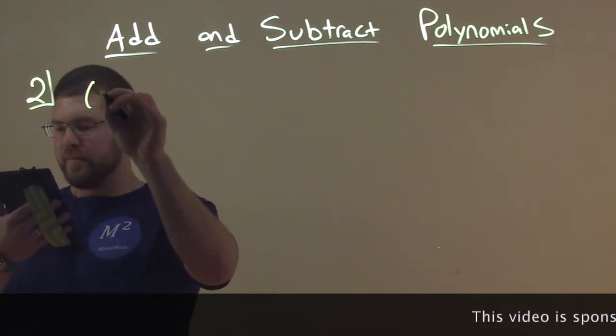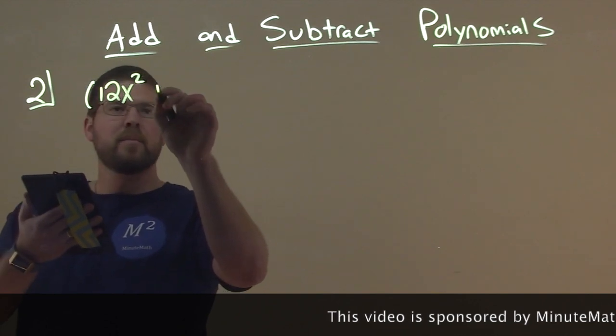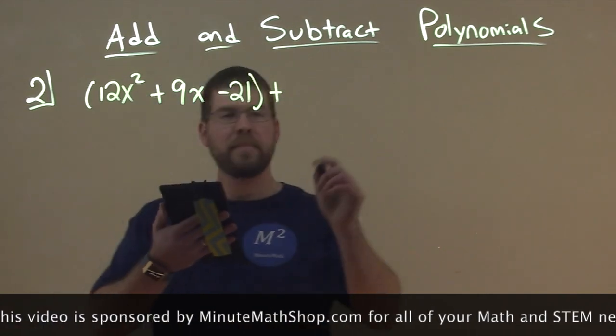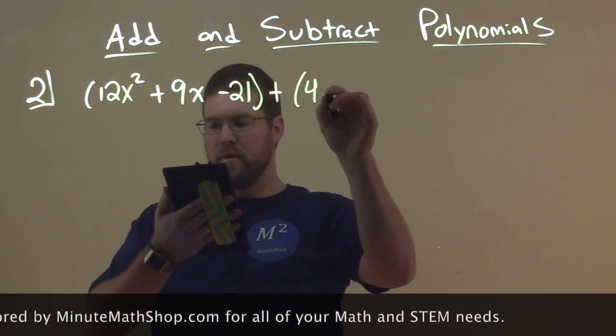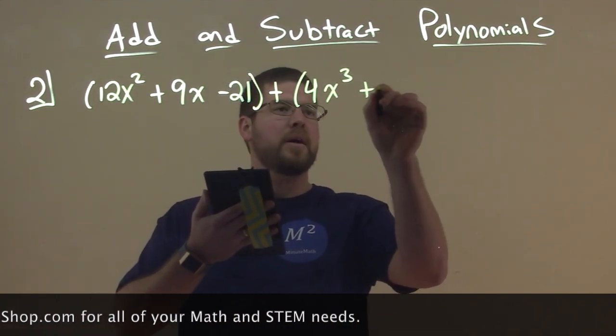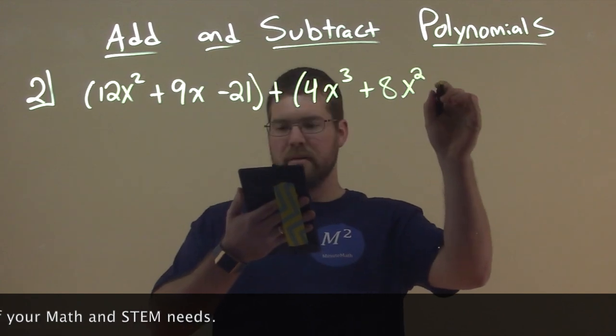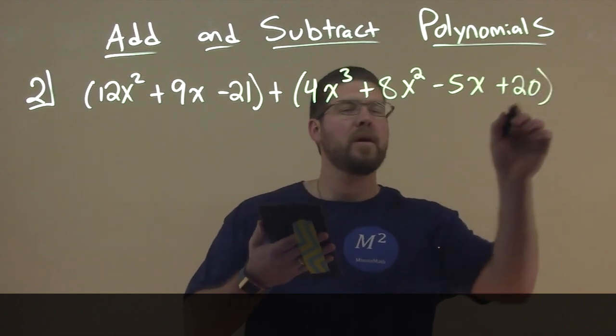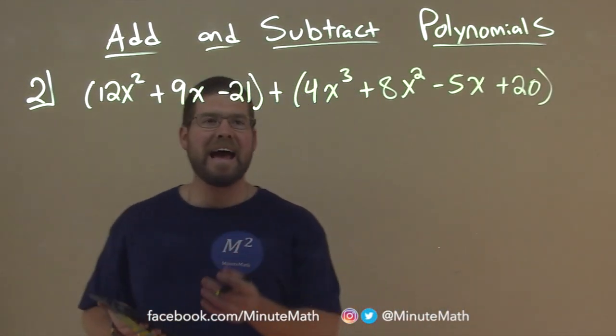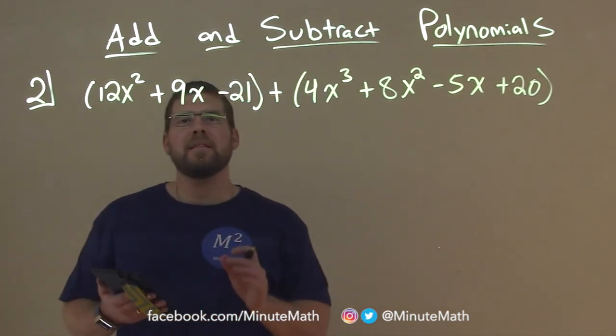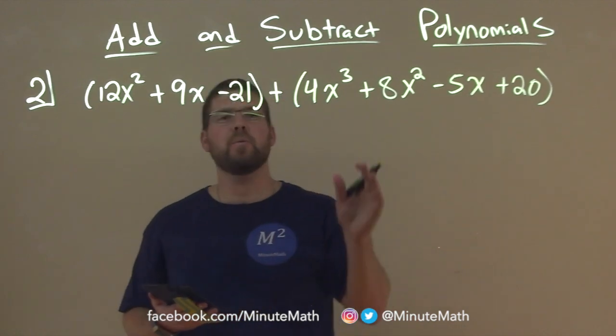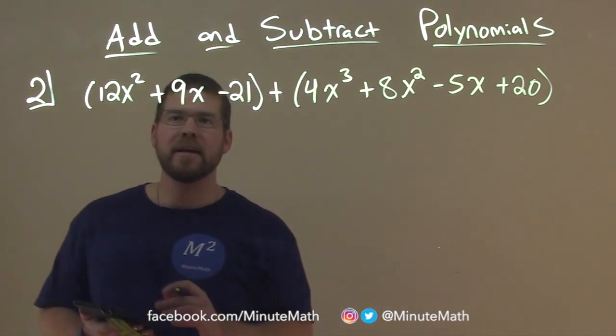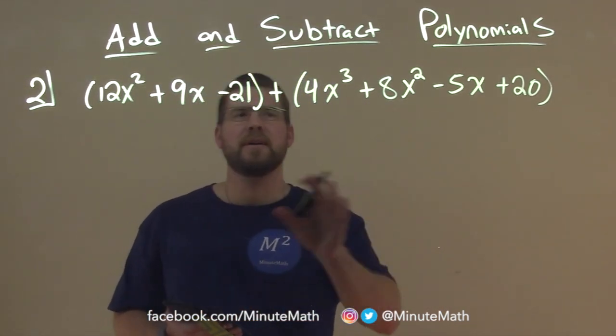We're going to find the sum. We're given 12x squared plus 9x minus 21, plus 4x to the third power plus 8x squared minus 5x plus 20. We have two large polynomials and we're just going to add them together. The way I like to first deal with adding polynomials is to rearrange from highest degree to lowest degree. Our addition property allows us to rearrange that.